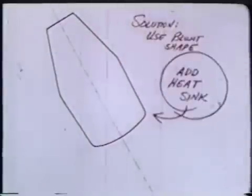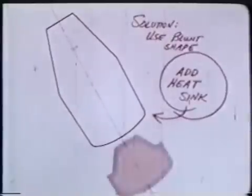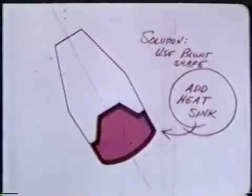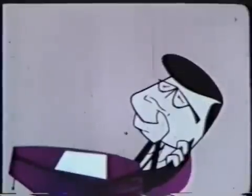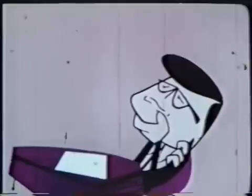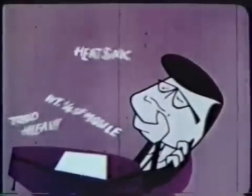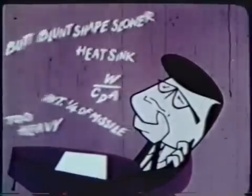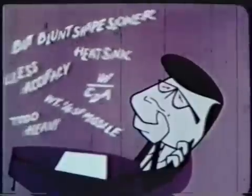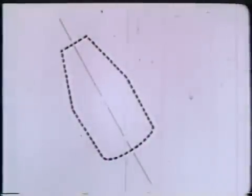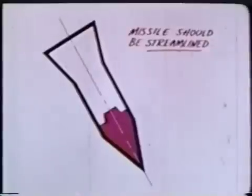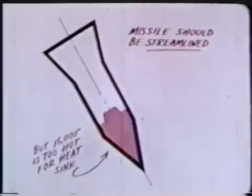His first solution is the heat sink. Use the blunt design and add a mass of heat-conducting metal large enough to absorb most of the heat generated during re-entry without melting before impact. It works, but he is not yet satisfied. The weight of the heat sink displaces more than one-fourth of the payload. Furthermore, the blunt design slows the missile, keeping it in the atmosphere a longer time, making it less accurate and easier to intercept. For the greatest accuracy and shortest time in the atmosphere, Doc knows that the streamlined shape is the best. But the heat sink cannot absorb and distribute the sudden extreme heat generated during the re-entry of a streamlined vehicle.